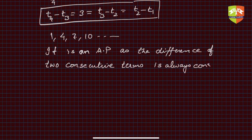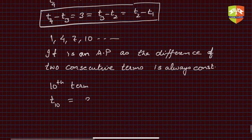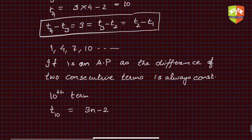Since the consecutive difference is always constant, this is indeed an AP. The terms are 1, 4, 7, 10, ... Now we need to find the 10th term. The 10th term t10 = 3(10) − 2 = 30 − 2 = 28. So 28 is the 10th term of this particular AP. I hope you understood this problem.